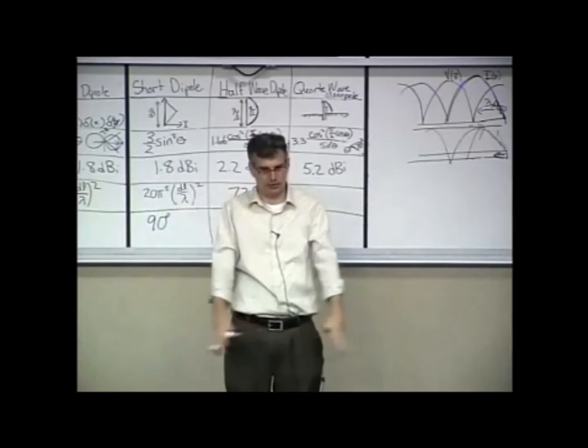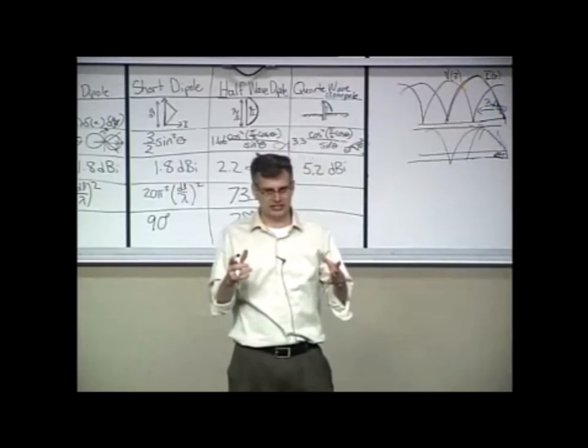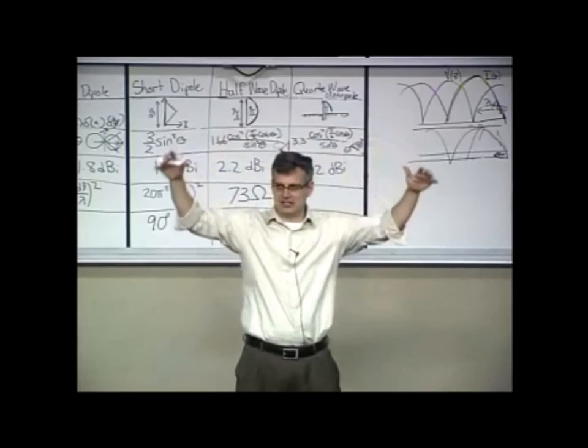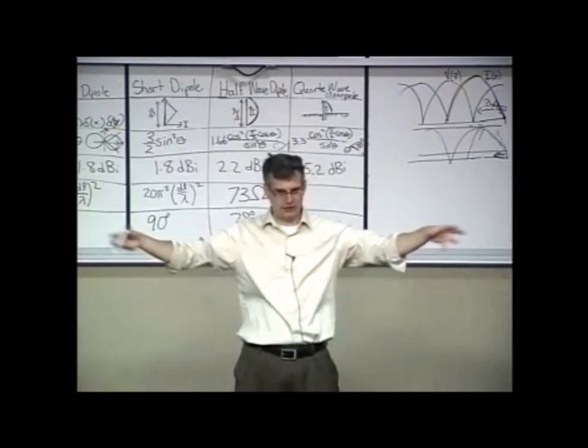A realistic, finite ground plane like a hunk of metal that you've drilled a hole for, it will look like a half-wave dipole at the top, and it'll start to go to 0 at the bottom, but there'll be lots of little side lobes, and you'll get some diffraction gratings off the edge as well. But it's still a very practical antenna.